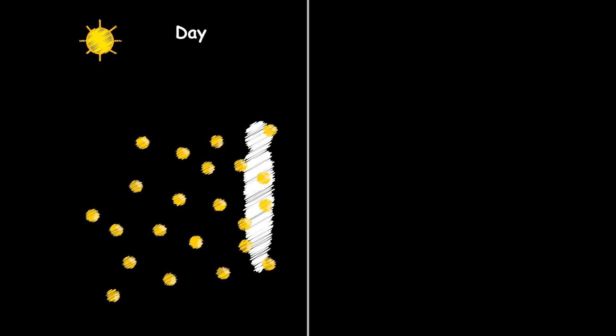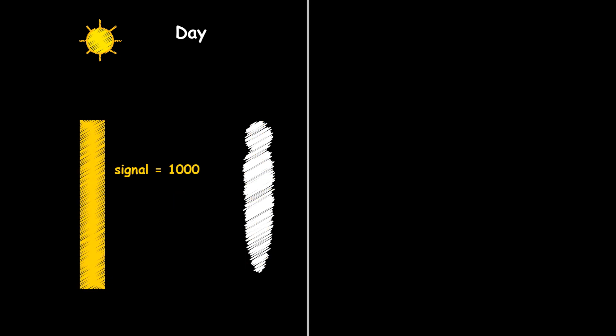In daylight, the signal in the animals we caught is 1000 photons per visual integration time, and the noise about 32. So the signal is 32 times larger than the noise, making vision highly reliable.